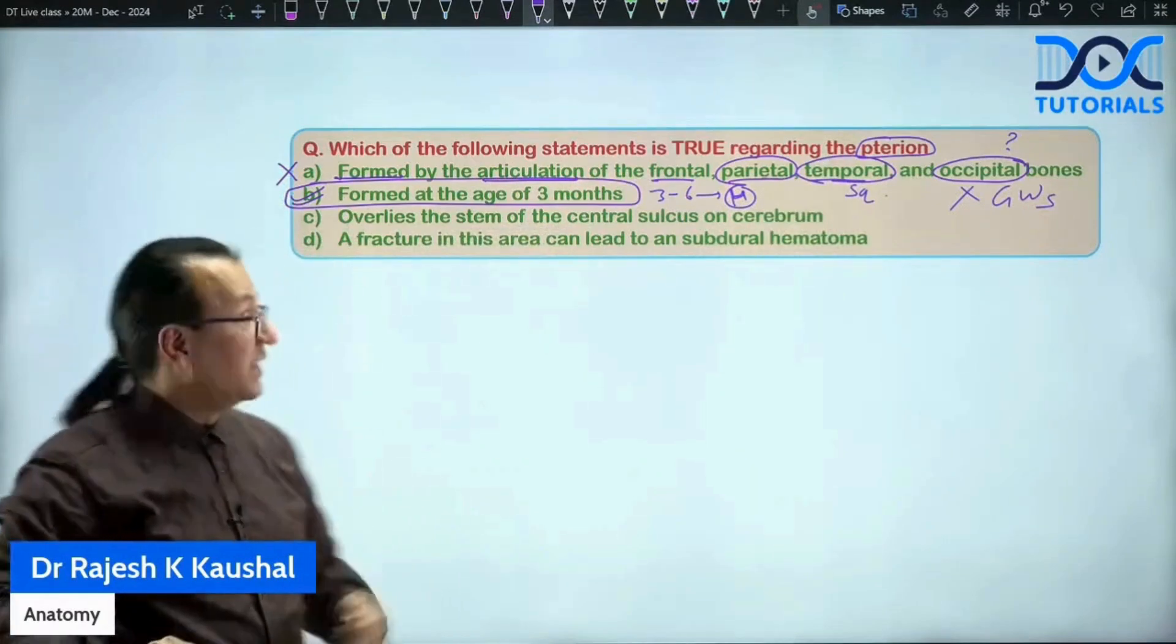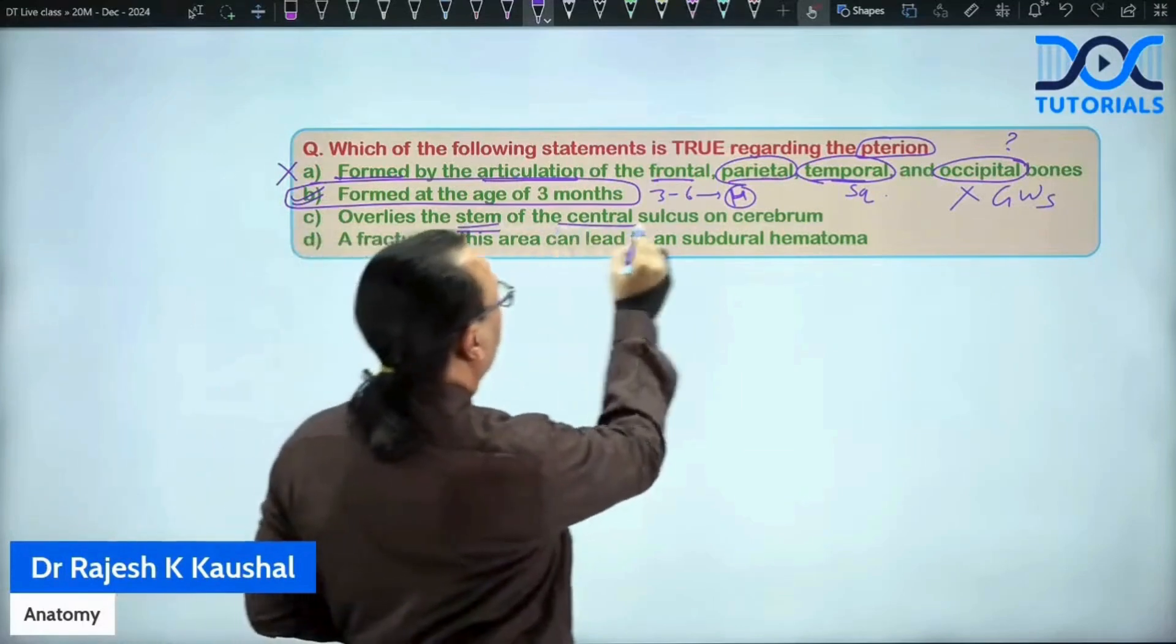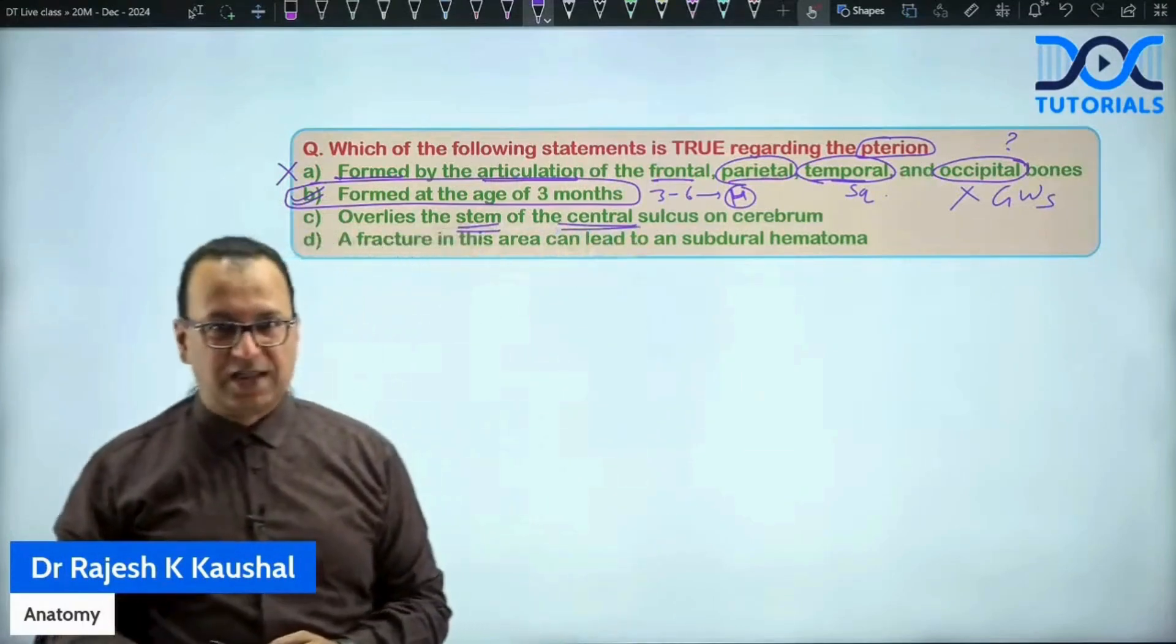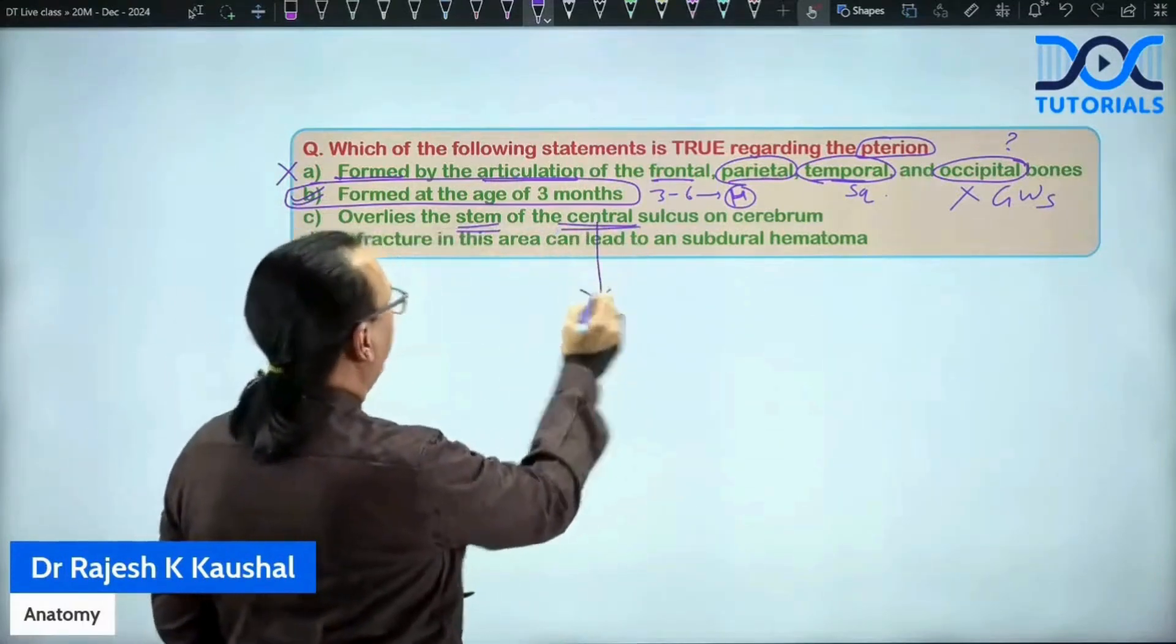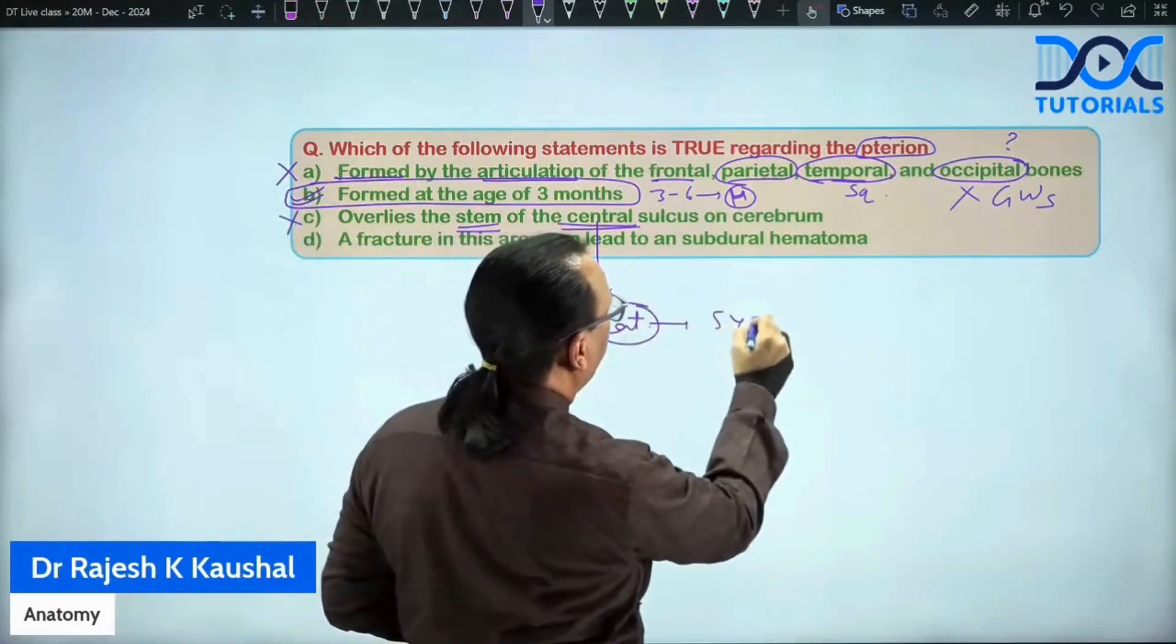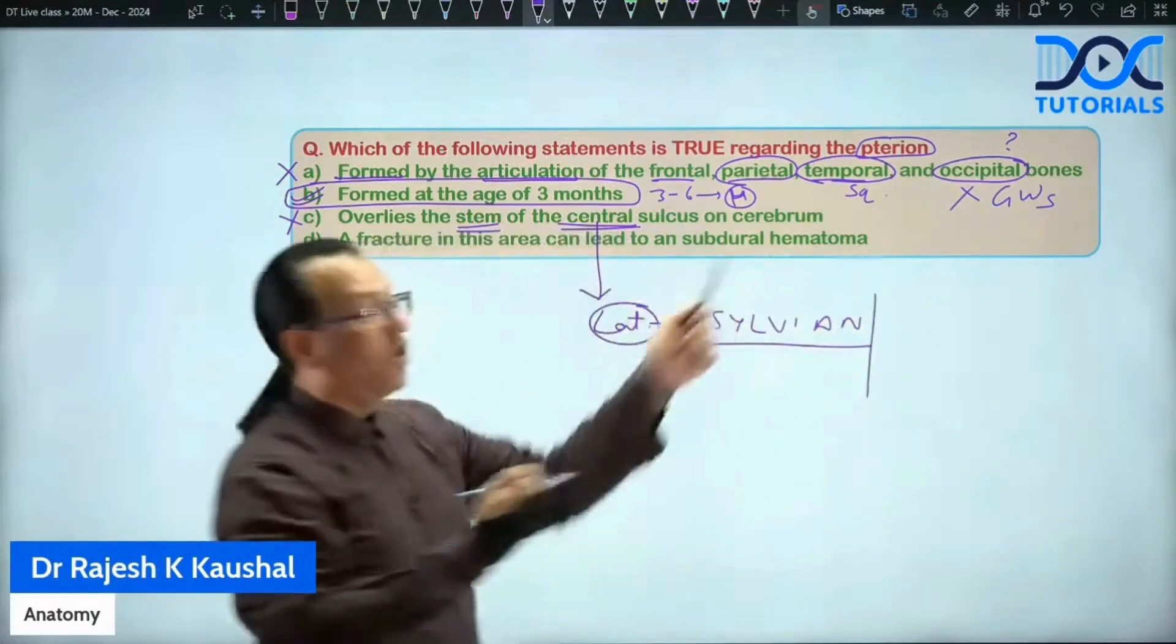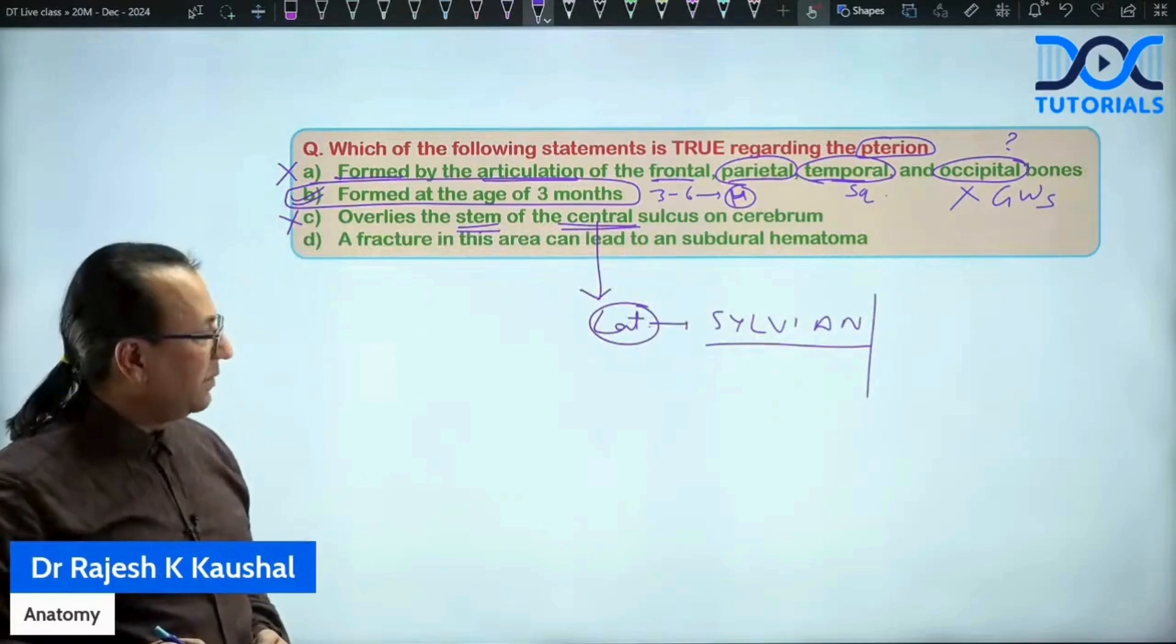What about choice number C? It overlies the stem of the central sulcus. Is it central sulcus or lateral sulcus? It is not central. This is wrong. It is lateral sulcus and which is also called as sylvian sulcus and that is why it is also called as sylvian point on cerebrum.